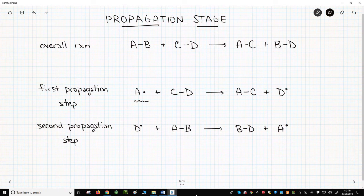Remember that we said propagation steps result in zero net change in the number of radicals. Both propagation steps start with one radical and end with one radical. When these steps occur, there is no net change in the number of radicals. That is always true for propagation reactions.